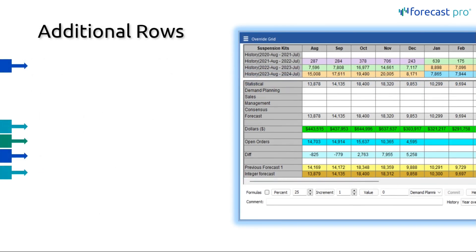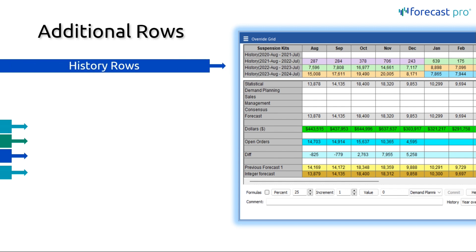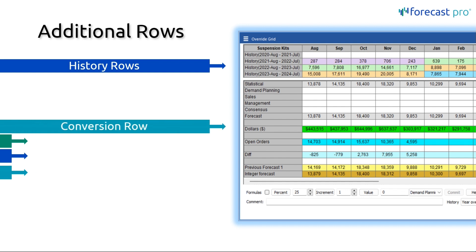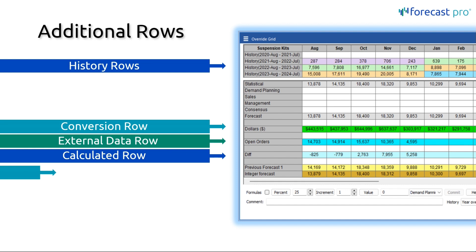In addition to just direct overrides in the override grid, we have additional rows of information that can help you when making these adjustments. These include the history rows, which can appear above the statistical forecast. Then there are four types of extra rows: the conversion rows, external data rows, calculated rows, and system rows. Let's take a look at each of these four individually and discuss how they are used.